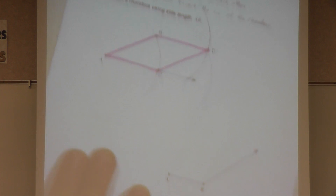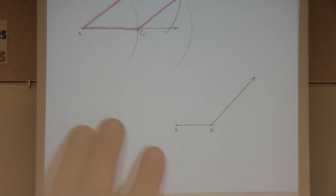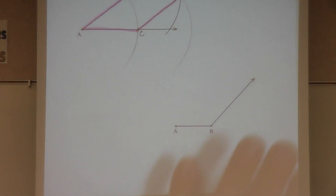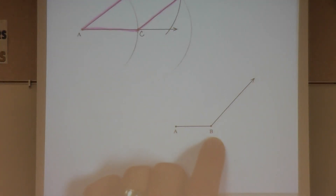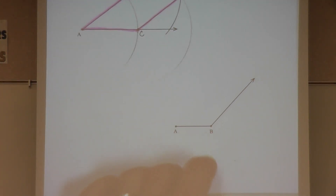Now for this next rhombus, I want you to take this picture and construct a rhombus with length AB for all sides. Draw a picture similar to this, pause the video, try the construction at home, and when you're ready, hit play.